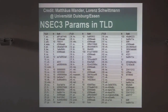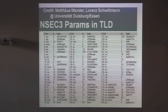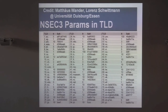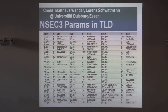A zone operator wanting to make cracking expensive could increase iterations — effectively an arms race. The RFC specifies maximum iteration counts based on key size: 500 for 2K keys and 2,500 for 4K keys. So with a larger key, higher iterations are permitted. We also observed 0 to 30 iterations in .gov domains, which vary highly depending on the operator.